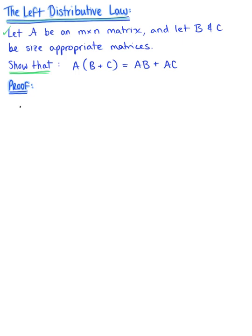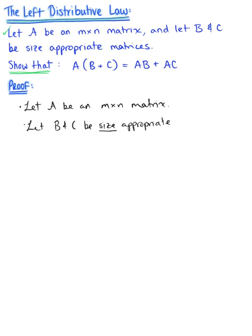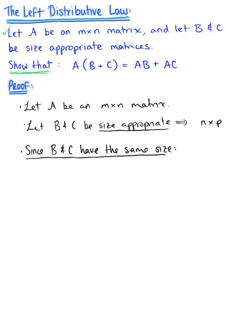I want to think about this in two different ways. To begin, let's think about what's given. We want to let A be an M by N matrix, and we're letting matrix B and matrix C be size appropriate. I'm going to give specific values to these size appropriate matrices — let's suppose that they are N by P matrices. Since matrix B and matrix C have the same size, we know by definition that matrix B plus matrix C exists.